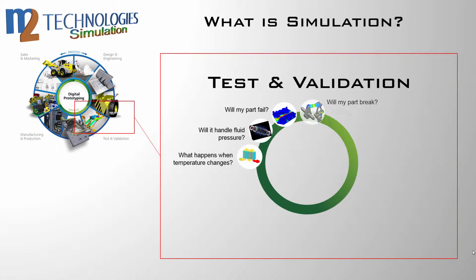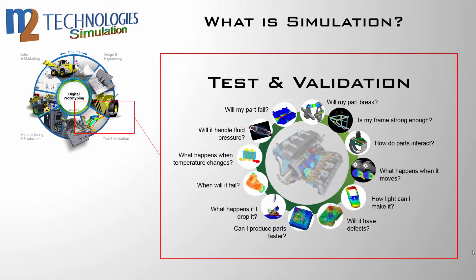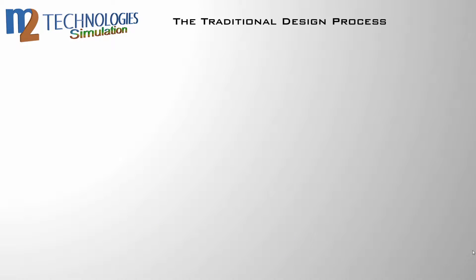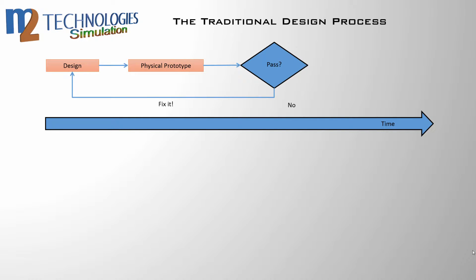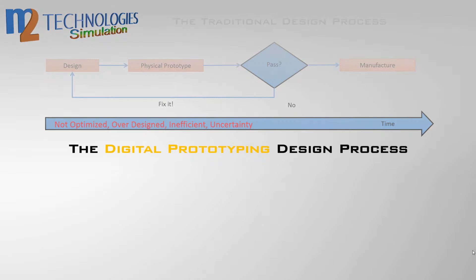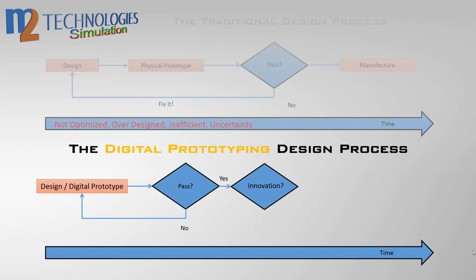This is the phase of your process where critical questions need to get answered — questions like: will my part break? How light can I make it? What happens when the temperature changes? These questions have traditionally been answered by building a physical prototype for testing, a costly and time-consuming process. Leveraging your digital prototype and the Autodesk simulation software portfolio, products can be tested in a virtual environment, thereby reducing or eliminating costly physical prototype iterations.